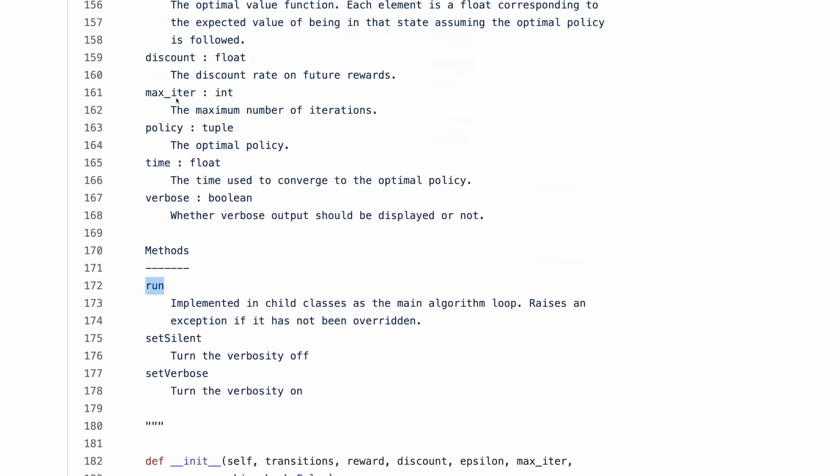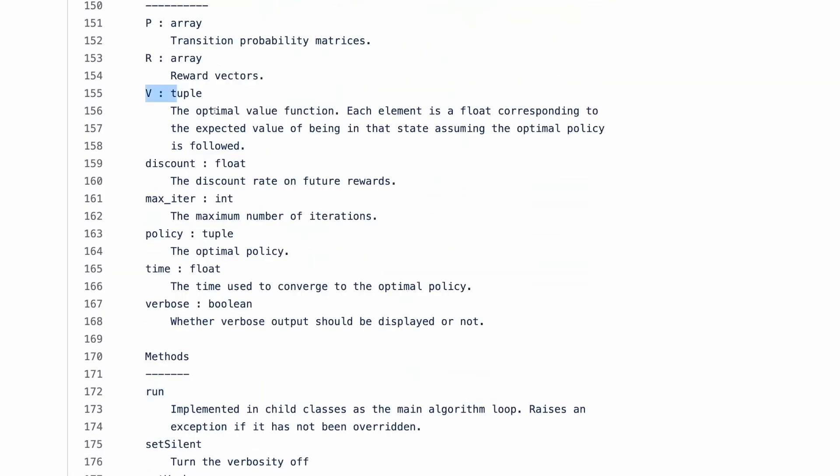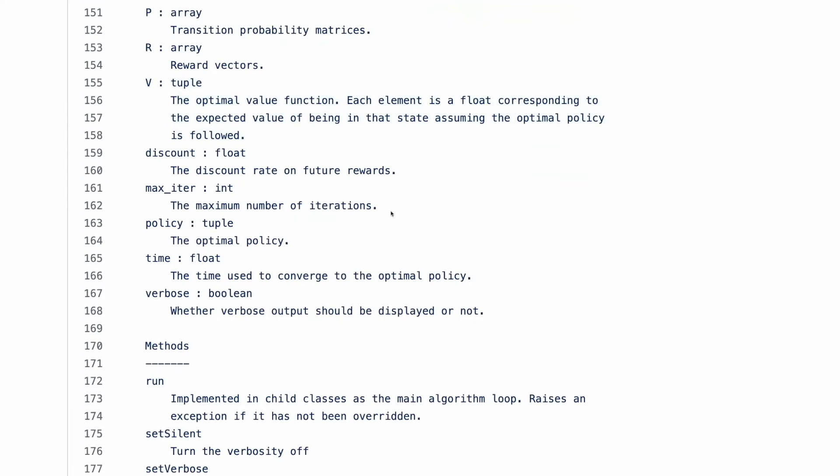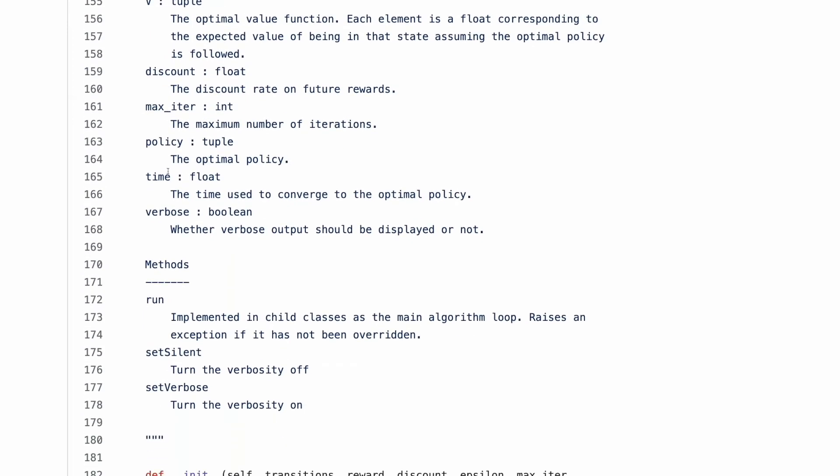Again, run will execute some logic that will compute all the V's for every state. The agent will know how good is to be in this state. Imagine a grid and for each cell of a grid, you will get a value. Then agent just needs to follow the path where the values are the largest and it will be optimal policy because it will allow him to collect the most rewards.